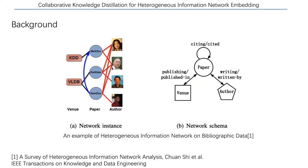Our idea comes from knowledge distillation, which has attracted much attention in the machine learning community. The general idea is that large-scale models with millions of parameters are deployed in cloud servers with high computational resources. However, such models cannot be deployed to edge devices with low computational resources, such as laptops, mobile phones, or IoT devices. Knowledge distillation aims at transferring knowledge from a large teacher network to a small student network, so that the lightweight student network can be deployed to low-resource devices. Recently, knowledge distillation has been explored in natural language processing, computer vision, and graphs.